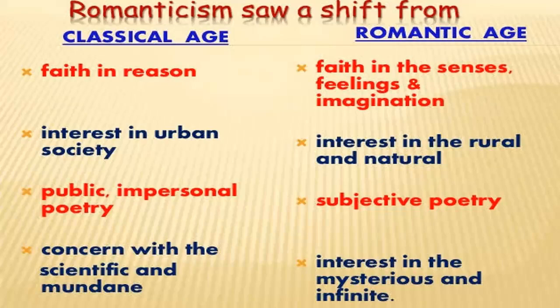Like many other literary movements, Romanticism developed in reaction to the dominant style of the preceding era. The 18th century is described by literary historians as the Augustan era, or the Augustan age, because it sought to emulate the culture of the reign of the Roman Emperor Augustus Caesar. Classical standards of order, harmony, proportion, and objectivity were preferred, and there appeared a revival of interest in classical architecture and literature. Greek and Roman authors were taken as models.